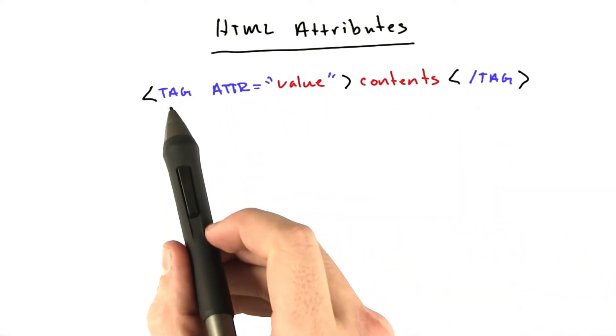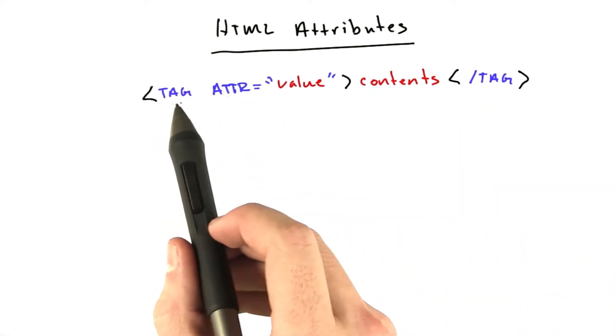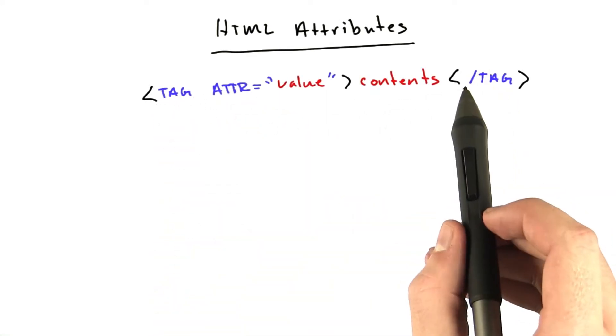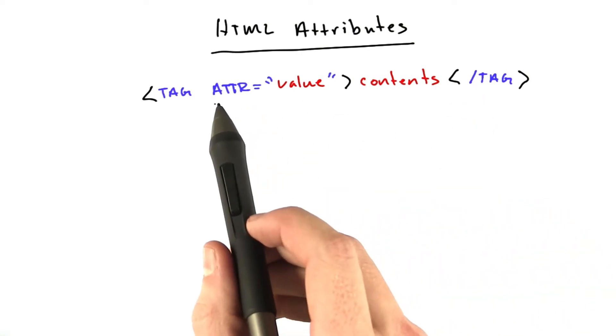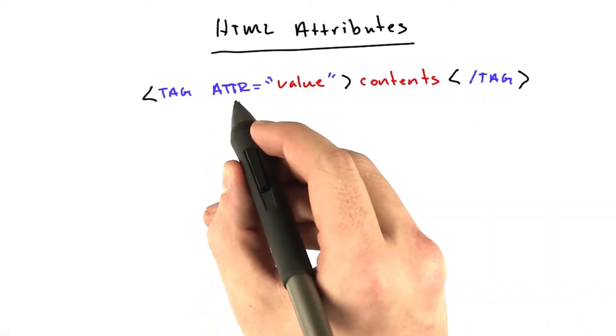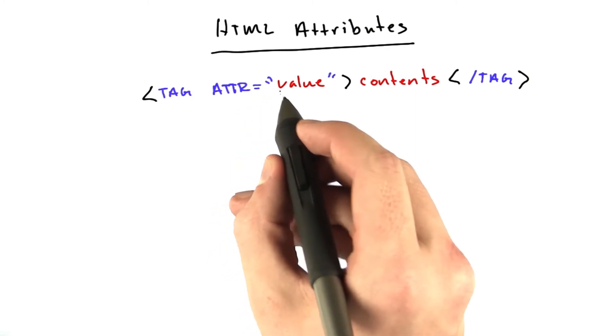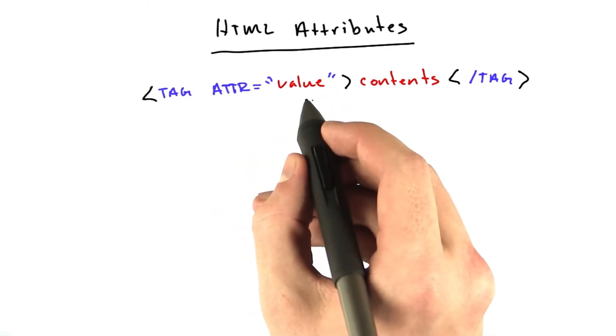They look something like this. We still have our opening tag name and the closing tag as before with the slash, but we have a new thing called an attribute. Attributes have a name. In this case, I just called it attr. Equals, and then you've got quotes, and the value is inside the quotes.